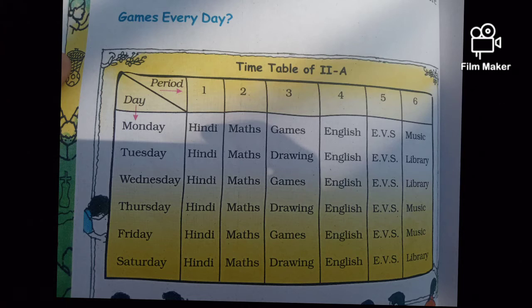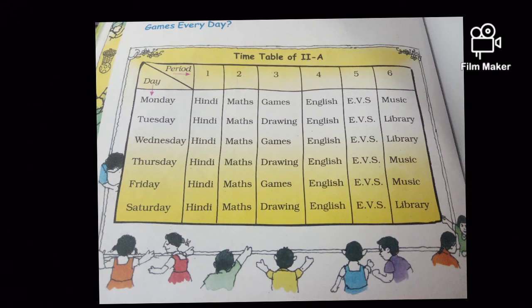Now we discuss the next part of the topic: Games Everyday. Let's see the timetable. Days and periods — Monday: first period Hindi, second Maths, third Games, fourth English, fifth EVS, sixth Music. Tuesday: Hindi, Maths, Drawing, English, EVS, Library. Wednesday: Hindi, Maths, Games, English, EVS, Library. Thursday: Hindi, Maths, Drawing, English, EVS, Music. Friday: Hindi, Maths, Games, English, EVS, Music. Saturday: Hindi, Maths, Drawing, English, EVS, Library.